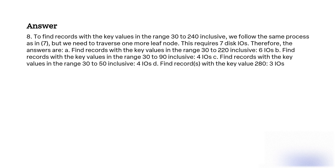Therefore, the answers are: A) Find records with key values in the range 30 to 220 inclusive — 6 disk I/Os. B) Find records with key values in the range 30 to 90 inclusive — 4 disk I/Os. C) Find records with key values in the range 30 to 50 inclusive — 4 disk I/Os.